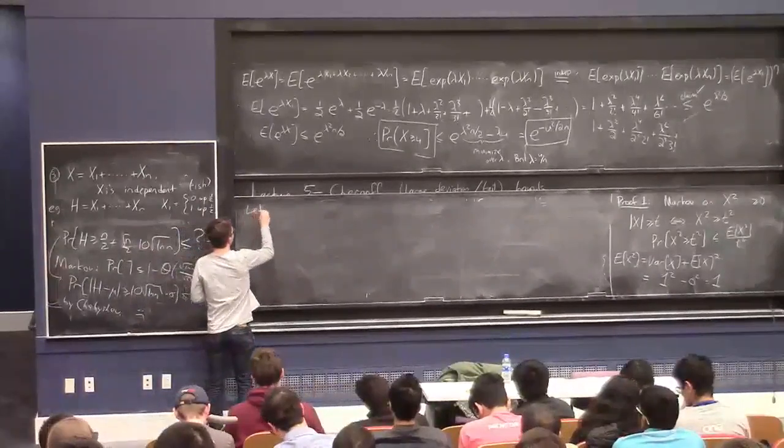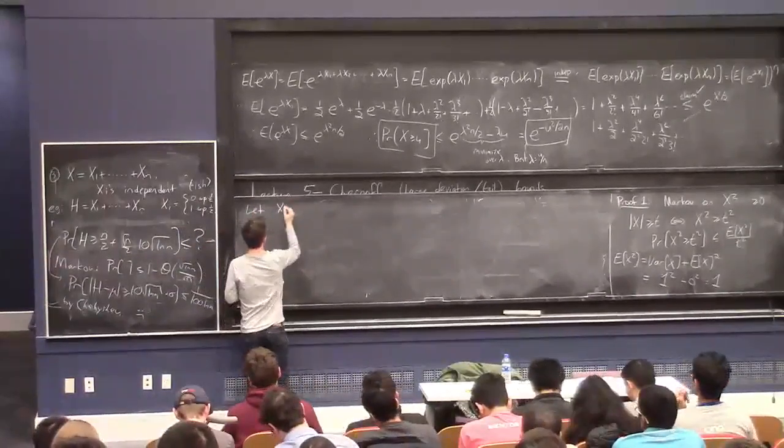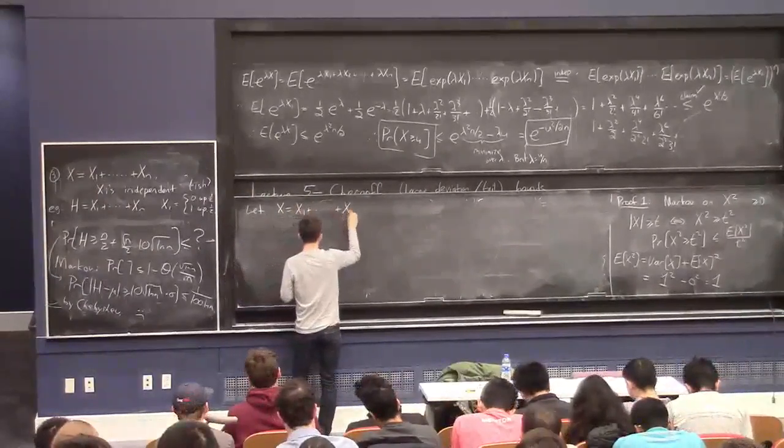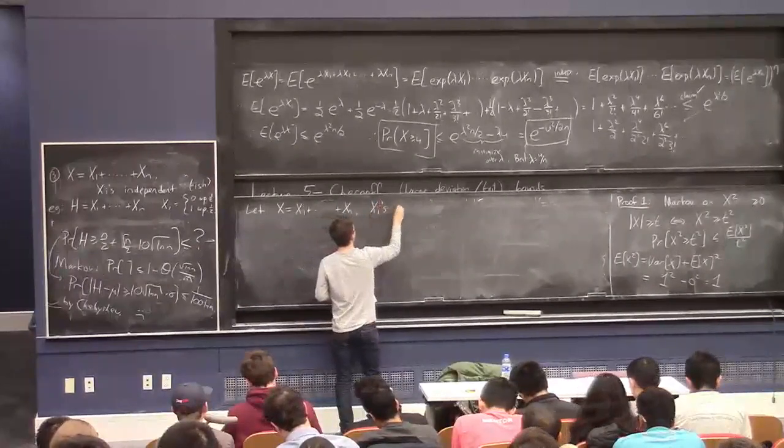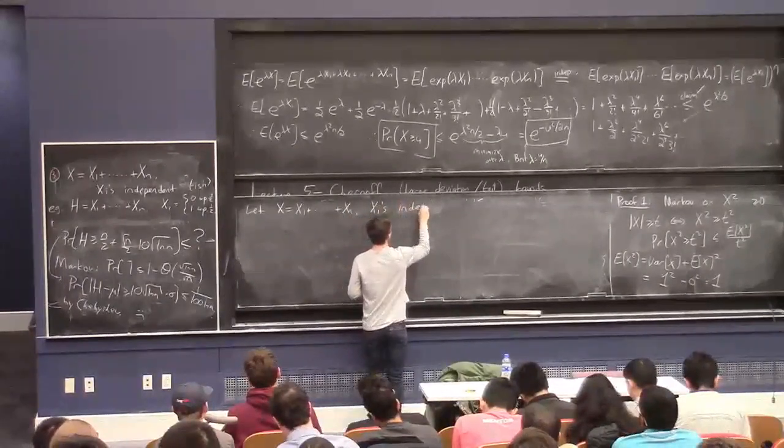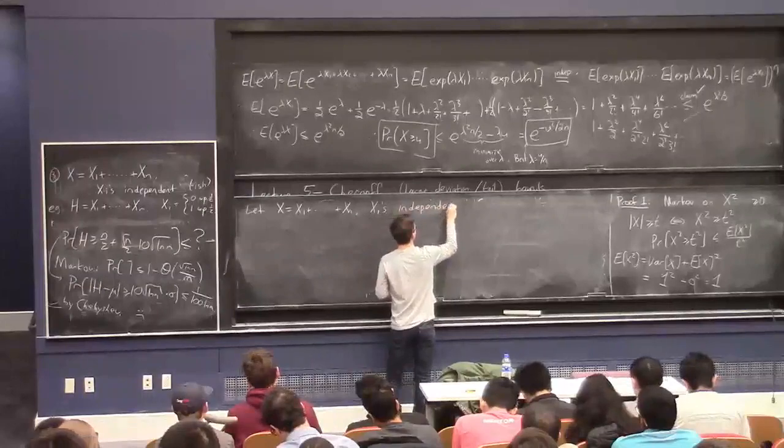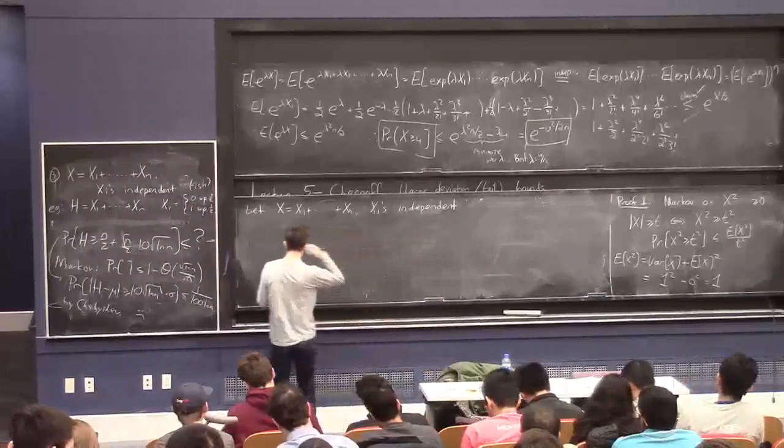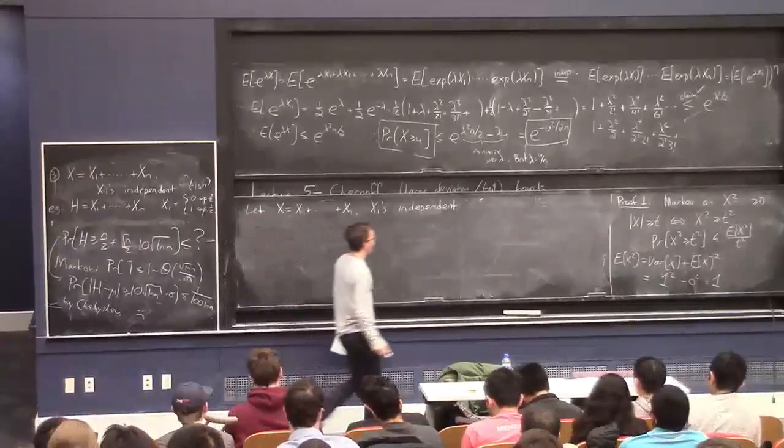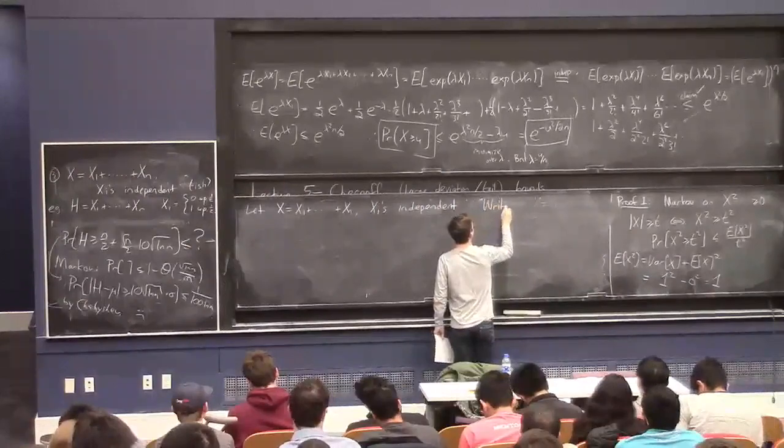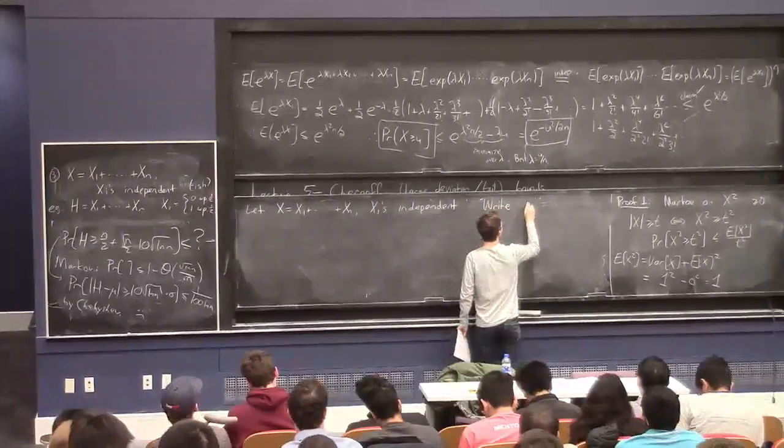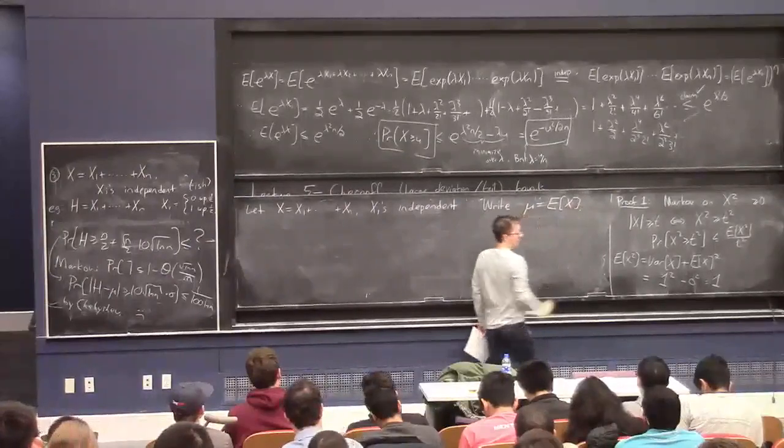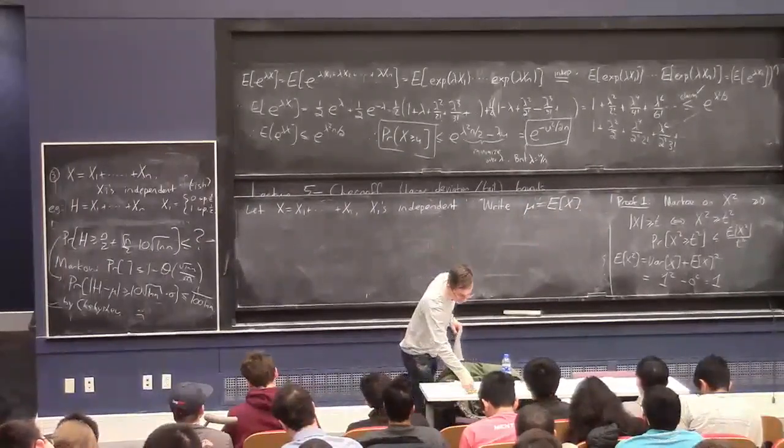So let X be X1 plus dot dot dot plus Xn, where the Xi's are independent, and they do not have to be identically distributed, which is nice. And let's write mu for the mean. And generally, you assume you can either compute this, or more or less compute this.